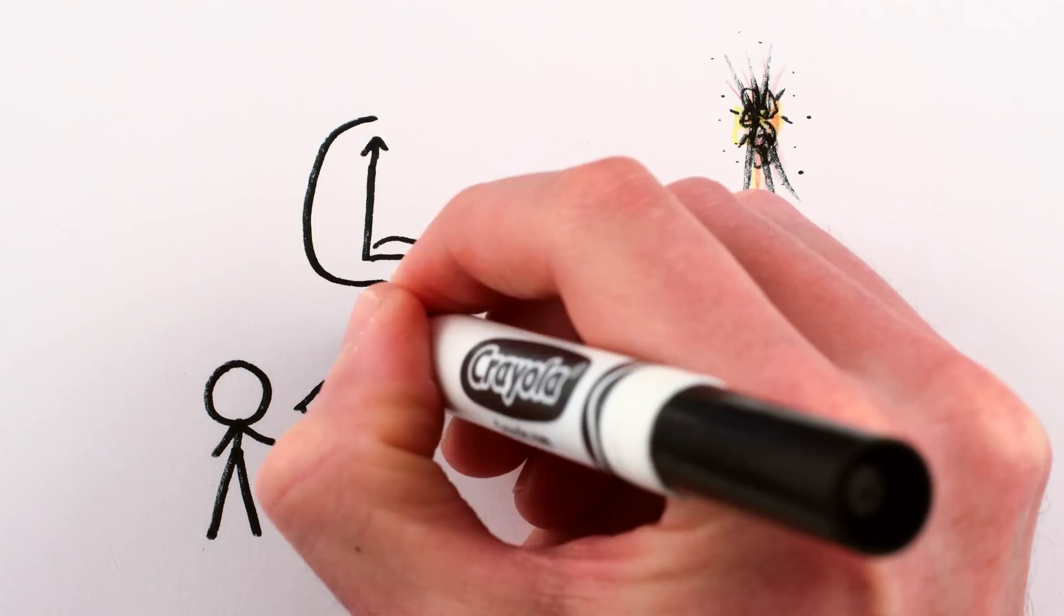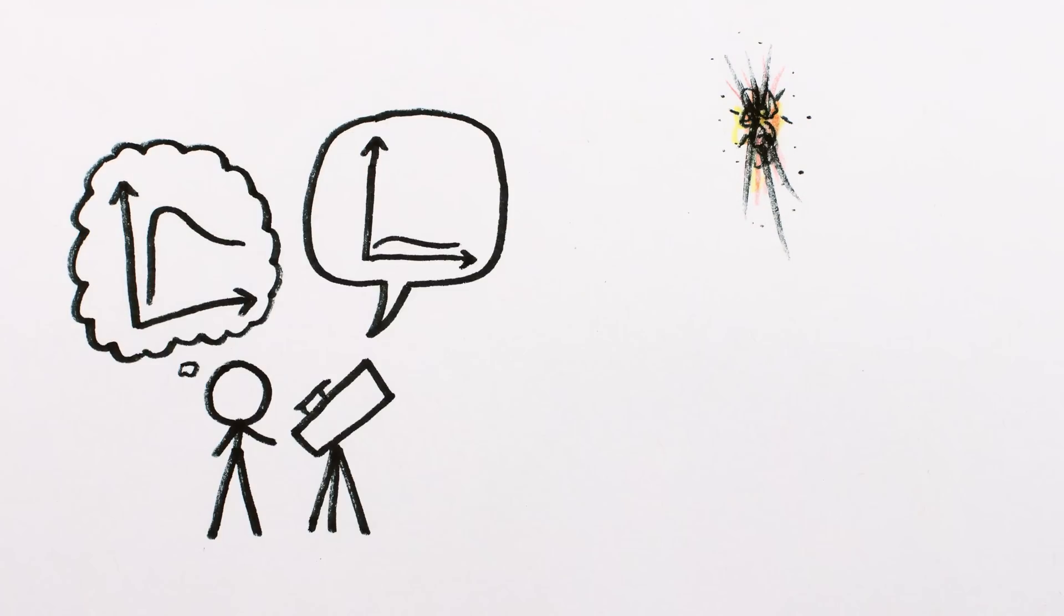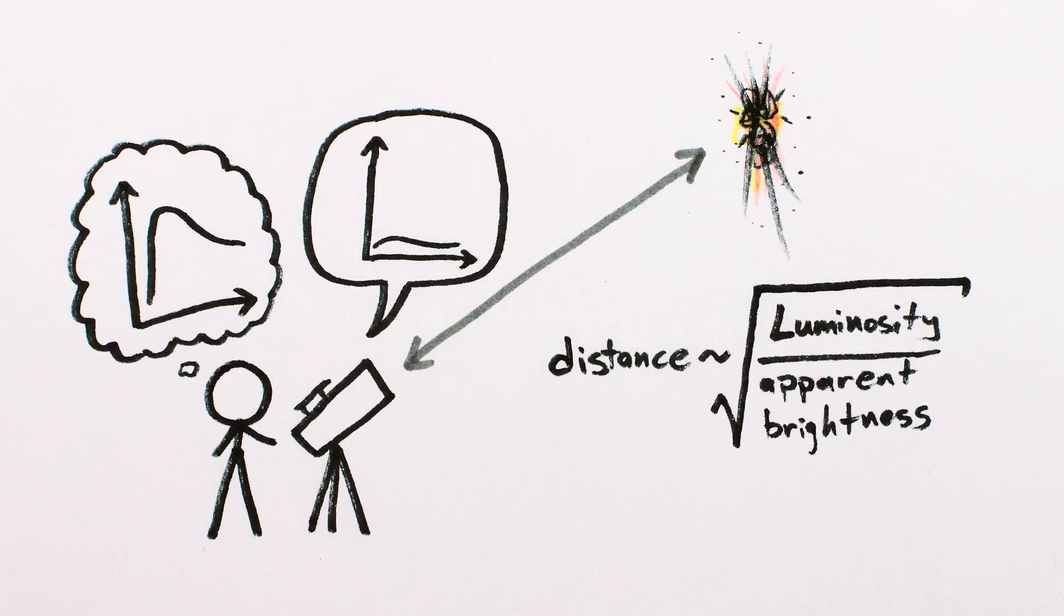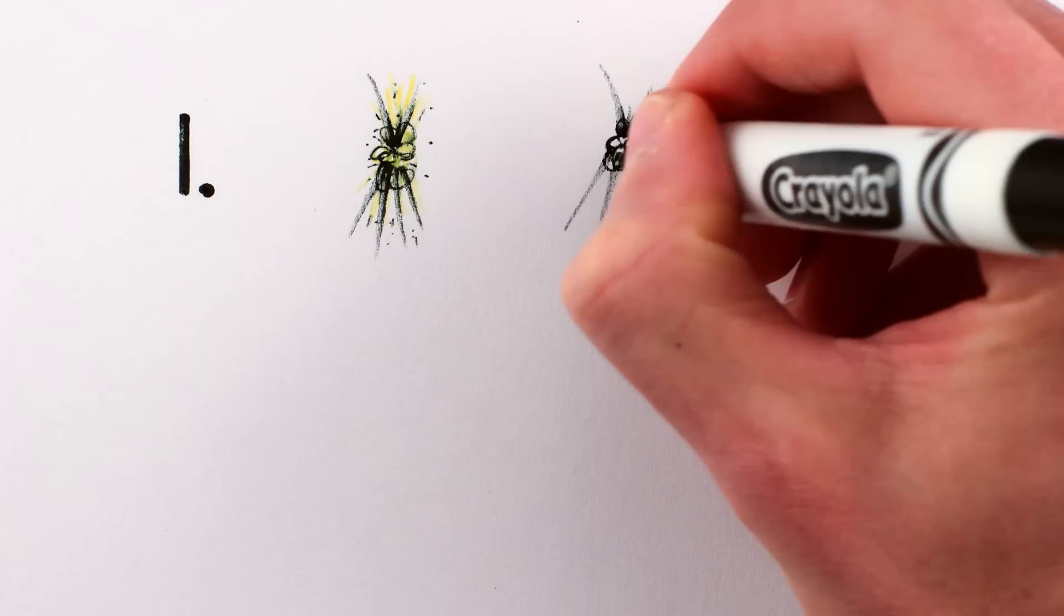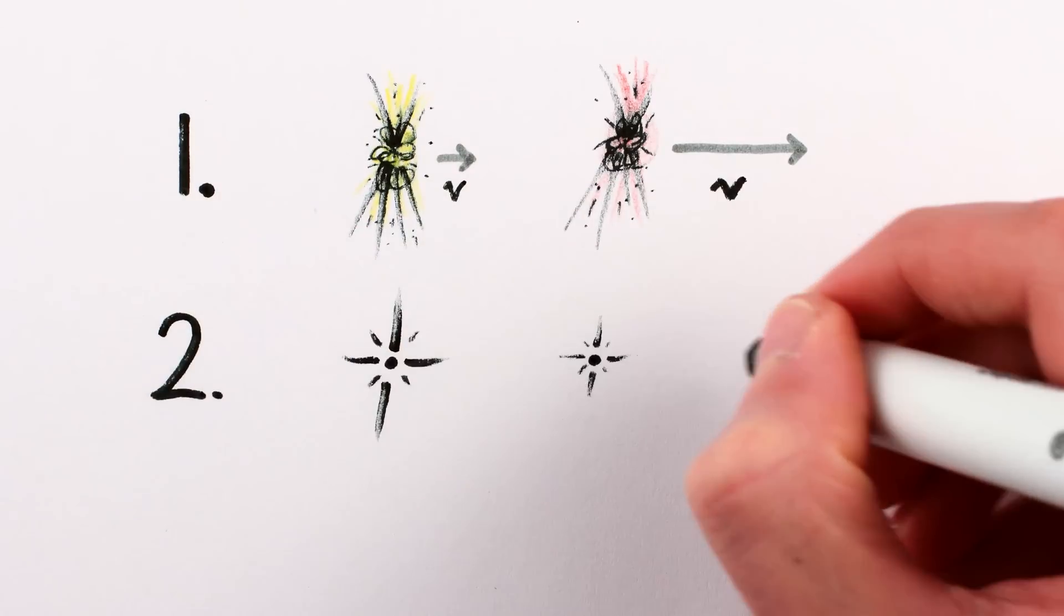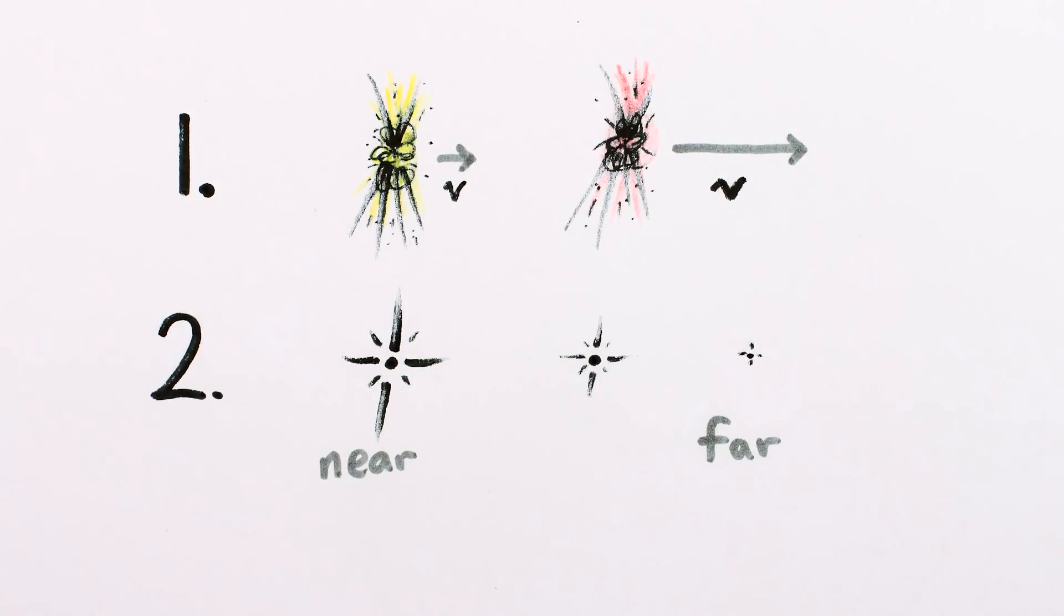By comparing the brightness as seen here on Earth with how bright we know each of them should be, we can work out how far away each supernova is. The dimmer its light, the farther away it is. So the color of a type 1a supernova tells us how fast it's moving away from us, and its brightness is like a ruler, telling us how far away it is. Or because light takes time to get here, how long ago we're measuring its speed.